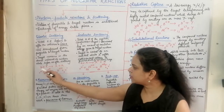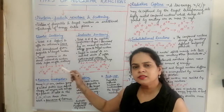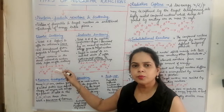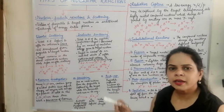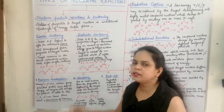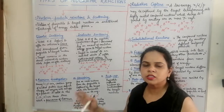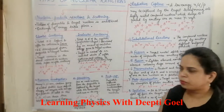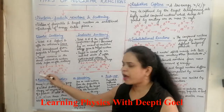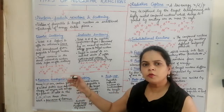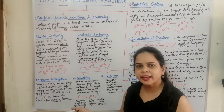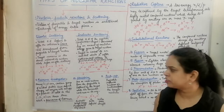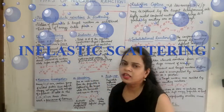In this reaction, A + X forms X + A, meaning the target nucleus X remains the same whether as a product or target, and the incoming and outgoing particles also remain the same. The kinetic energy of the reactants equals the sum of kinetic energy of the products. For example, uranium fired by a neutron simply moves in some direction, and the neutron also moves in another direction. This is what happens in elastic scattering.